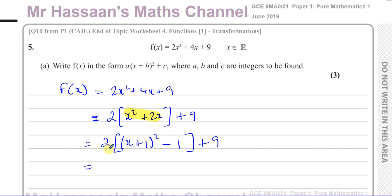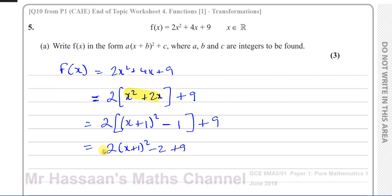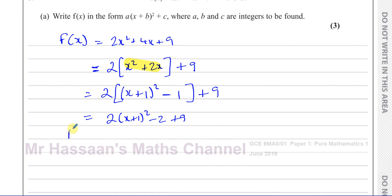So I expand the bracket: 2 times (x plus 1) squared, minus 2 from the 2 times negative 1, and then plus 9 on the outside. The final step is to write f of x equals 2 times (x plus 1) squared plus 7. So there we have completed the square and written it in the required form. That's the answer to part A.